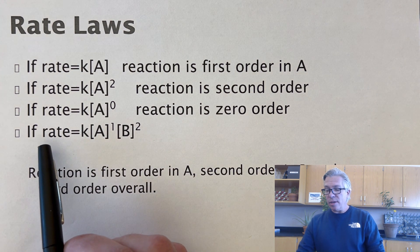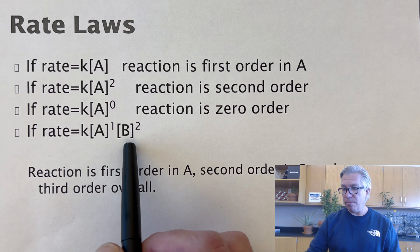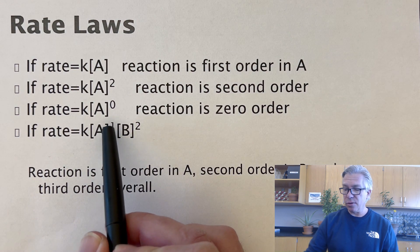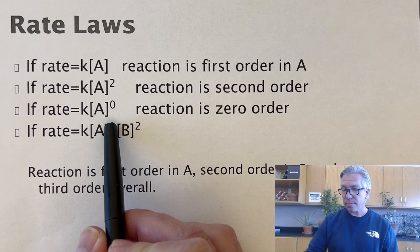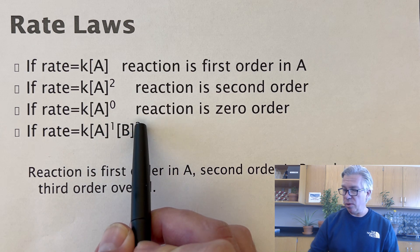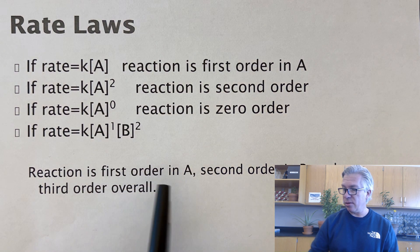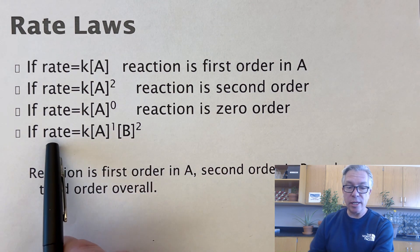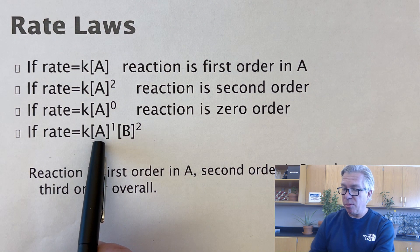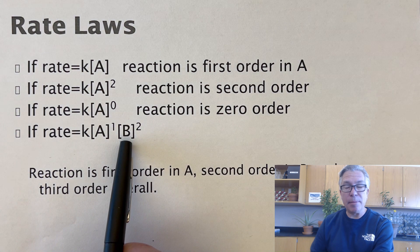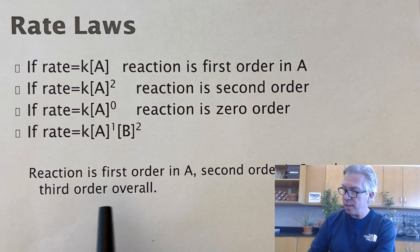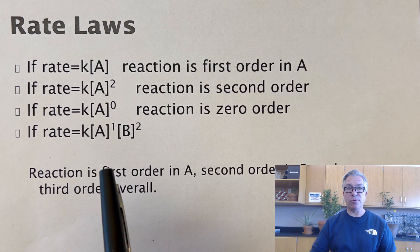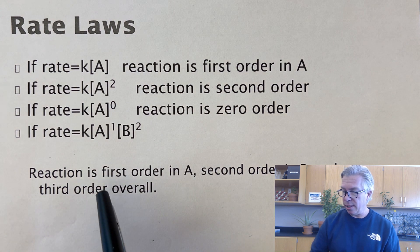What if you had two reactants and both can be expressed by an order — like A is first order but B is second order? We would say it's first order in A, second order in B. The rate is proportional to A, but proportional to the square of B. We would say it's third order overall because we have the magnitude of three exponents present.